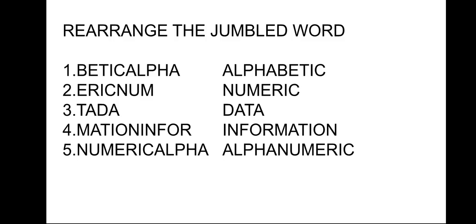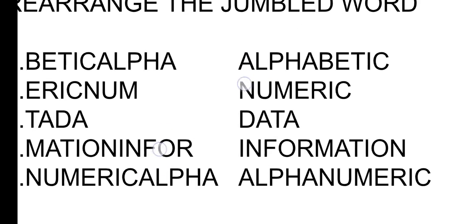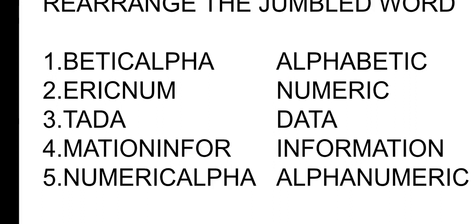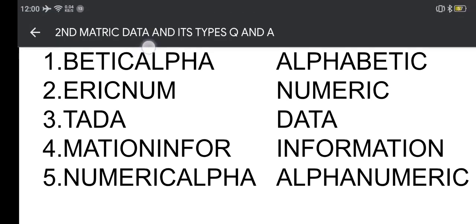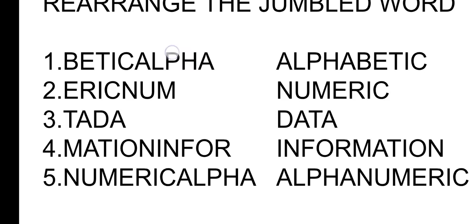There will be a box, and inside the box you have to write the arranged words. See here: 'betic alpha' — is there any meaning for this? No. So we bring 'alpha' to the front, and it becomes 'alphabetic.' The corrected word is alphabetic.